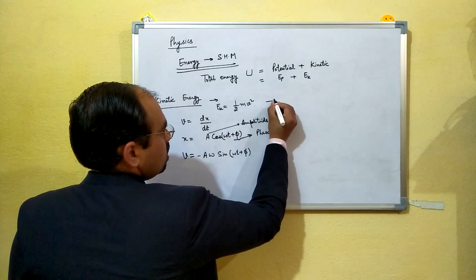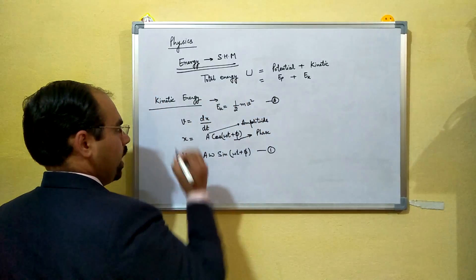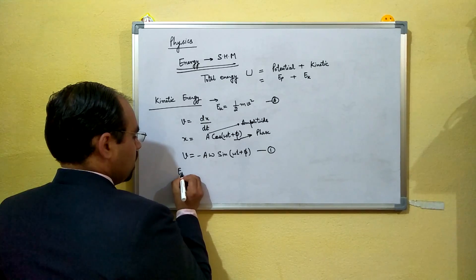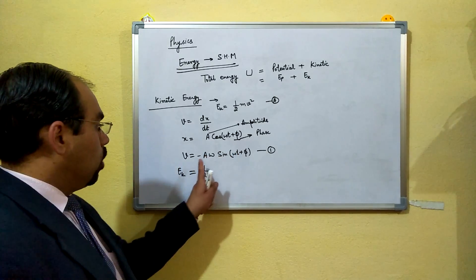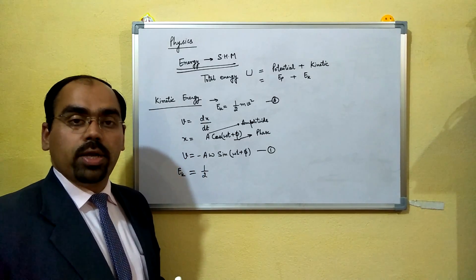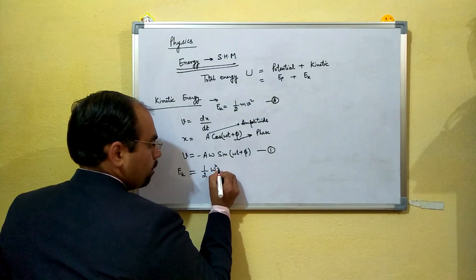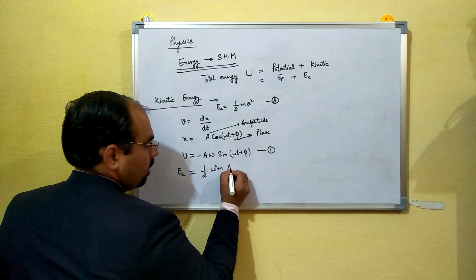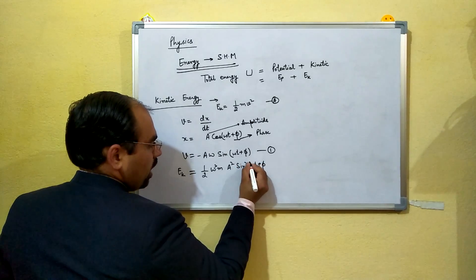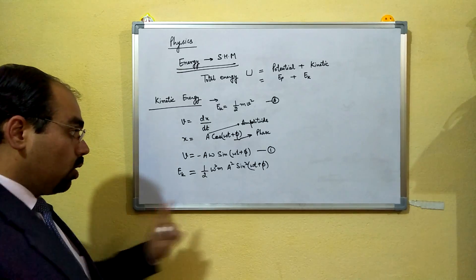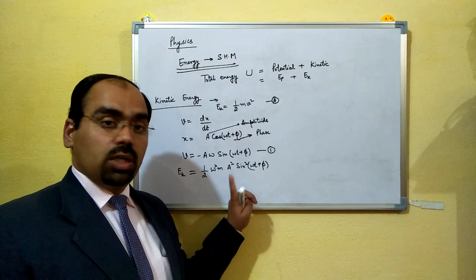Now let's substitute this into our kinetic energy expression. EK is equal to one half m times v squared. Squaring the expression makes it positive, giving us EK equals one half m·ω²·A²·sin²(ωt + φ).